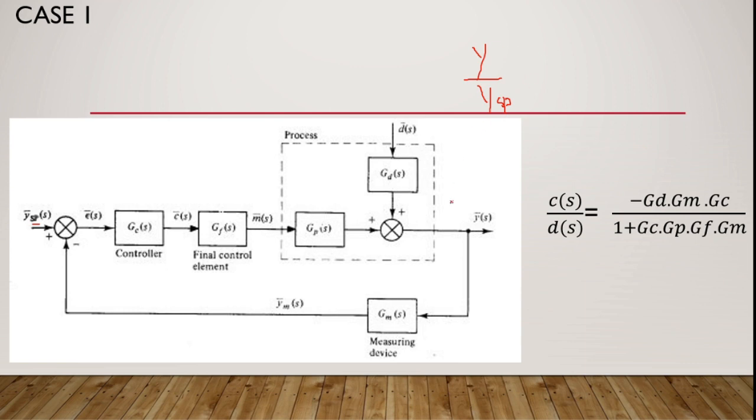We also know how to find Y by D. What is this called? Regulatory transfer function. We know how to find these two. We have standard expressions for these. You will find this in any book on process control.